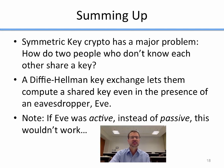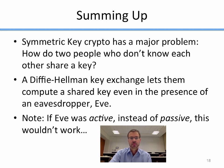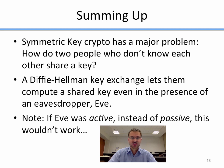Summing up: symmetric key crypto has a major problem — how do two people who don't know each other share a key, people who have never communicated before? A Diffie-Hellman key exchange lets them compute a shared key even in the presence of an eavesdropper, Eve. It's worth noting that if Eve was active instead of passive — not a passive attacker who just watched, but an active attacker who manipulated messages — this wouldn't work. We're going to try to do an in-class exercise that demonstrates that. That's all for now.